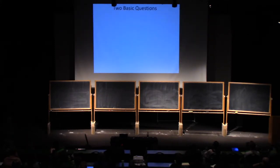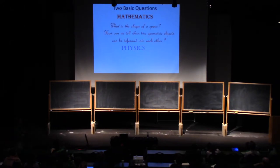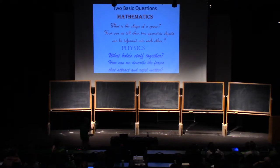The beginning of our story starts with two basic questions, one in mathematics and one in physics. In mathematics, the question is: what is the shape of a space? How can we tell when two geometrical objects can be deformed into each other? In physics, the question is: what holds stuff together? How can we describe the forces that attract and repel matter? On the face of it, these two questions have absolutely nothing to do with each other. Well, we'll see.